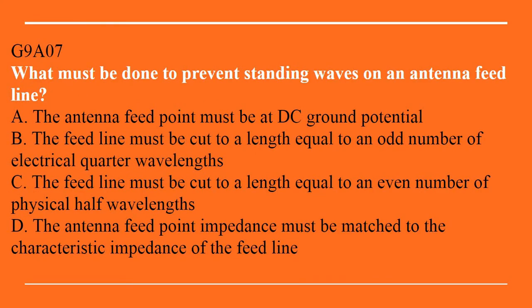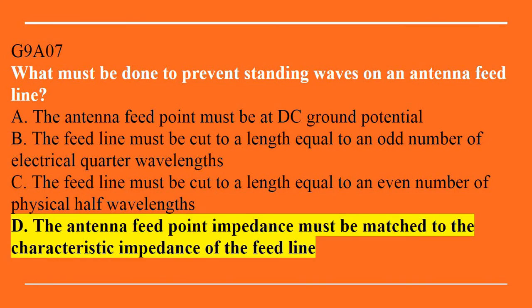G9A07: What must be done to prevent standing waves on an antenna feed line? A. The antenna feed point must be at DC ground potential. B. The feed line must be cut to a length equal to an odd number of electrical quarter wavelengths. C. The feed line must be cut to a length equal to an even number of physical half wavelengths. Or D. The antenna feed point impedance must be matched to the characteristic impedance of the feed line. The answer is D — the antenna feed point impedance must be matched to the characteristic impedance of the feed line.